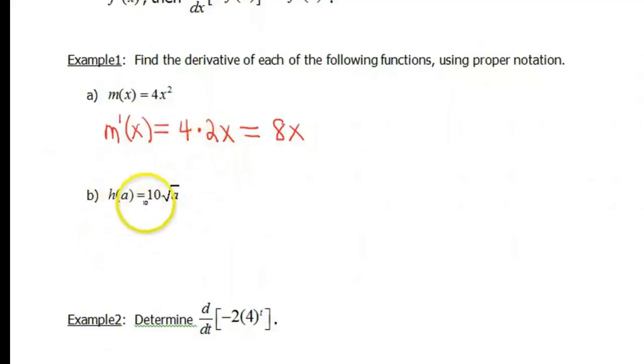Okay, h of a equals 10 times the square root of a. Now, the square root, well, that's not really anything that we know right off the bat for any kind of rules. But I can rewrite it as a power and then use the power rule. So that's gonna be 10 times a to the 1/2 power.